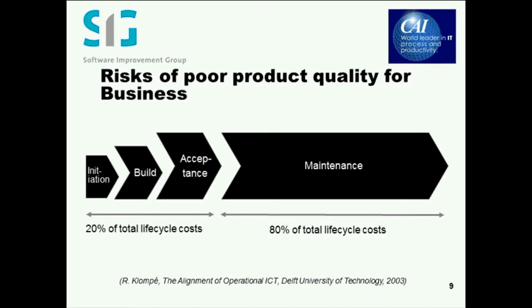So, what are common problems in software projects? What we find is that there are a number, and they basically boil down to three main problems.